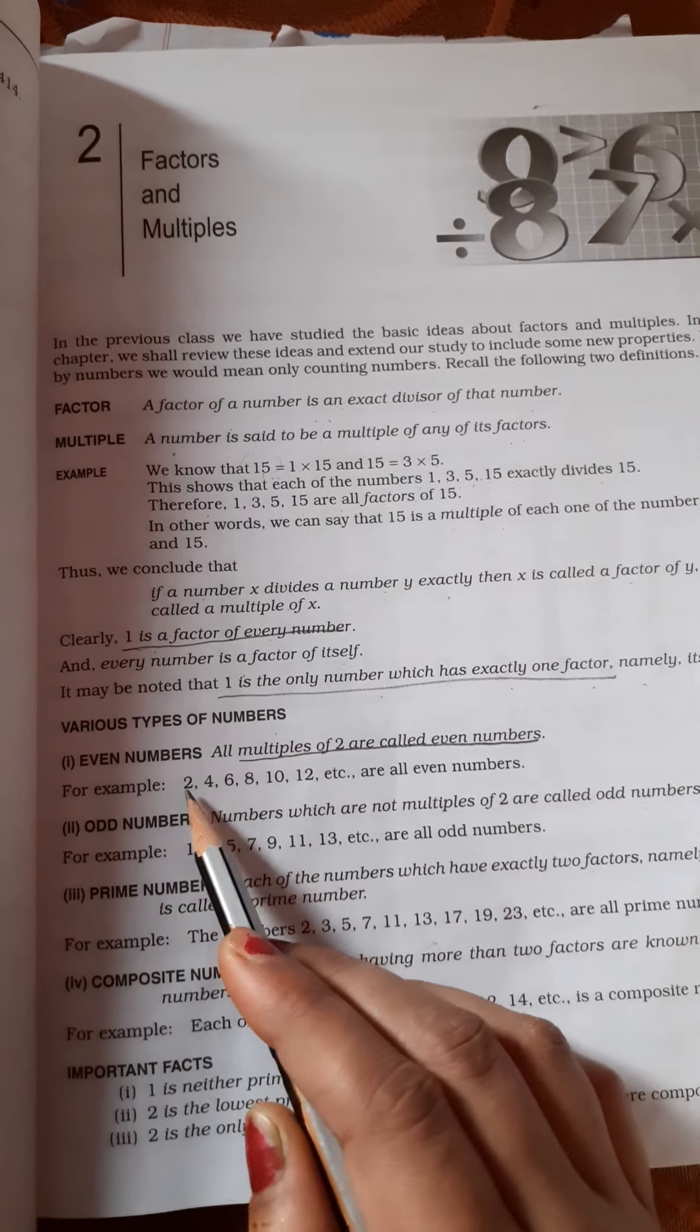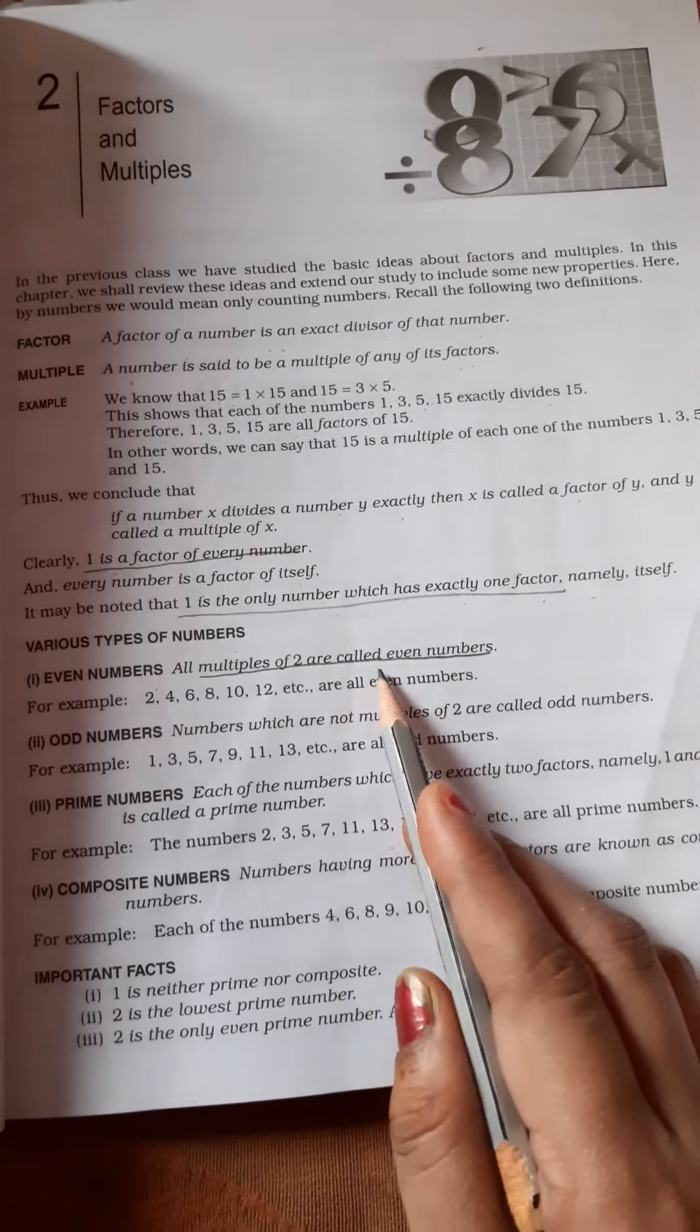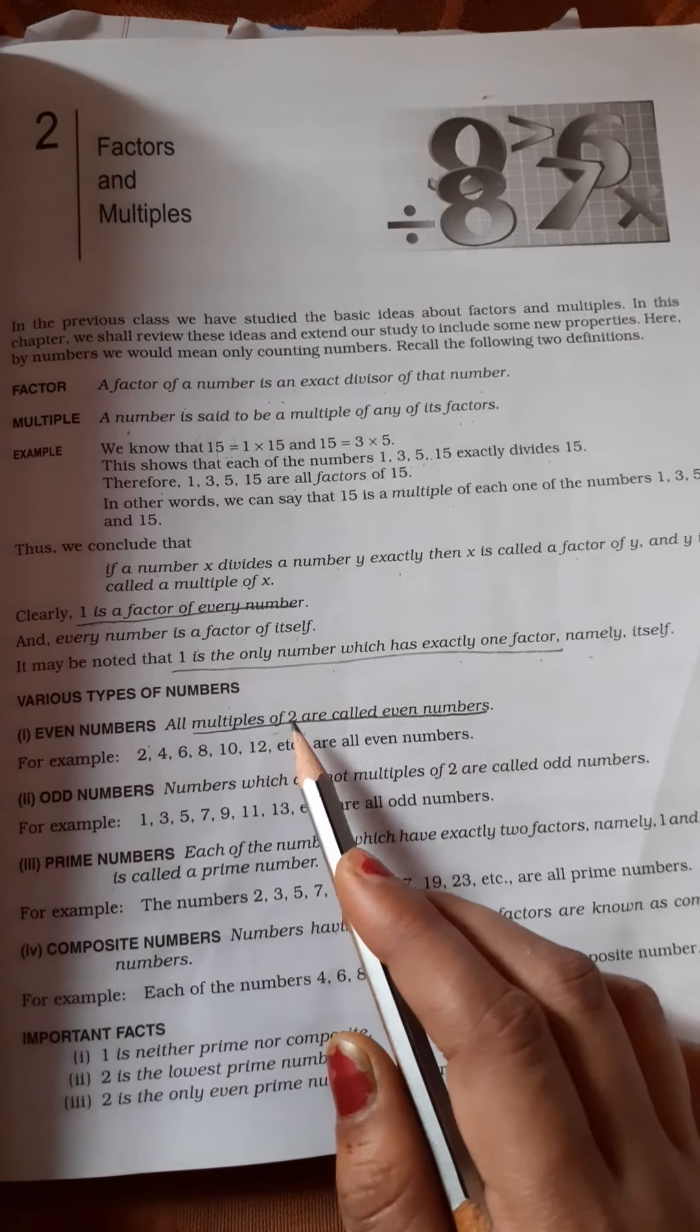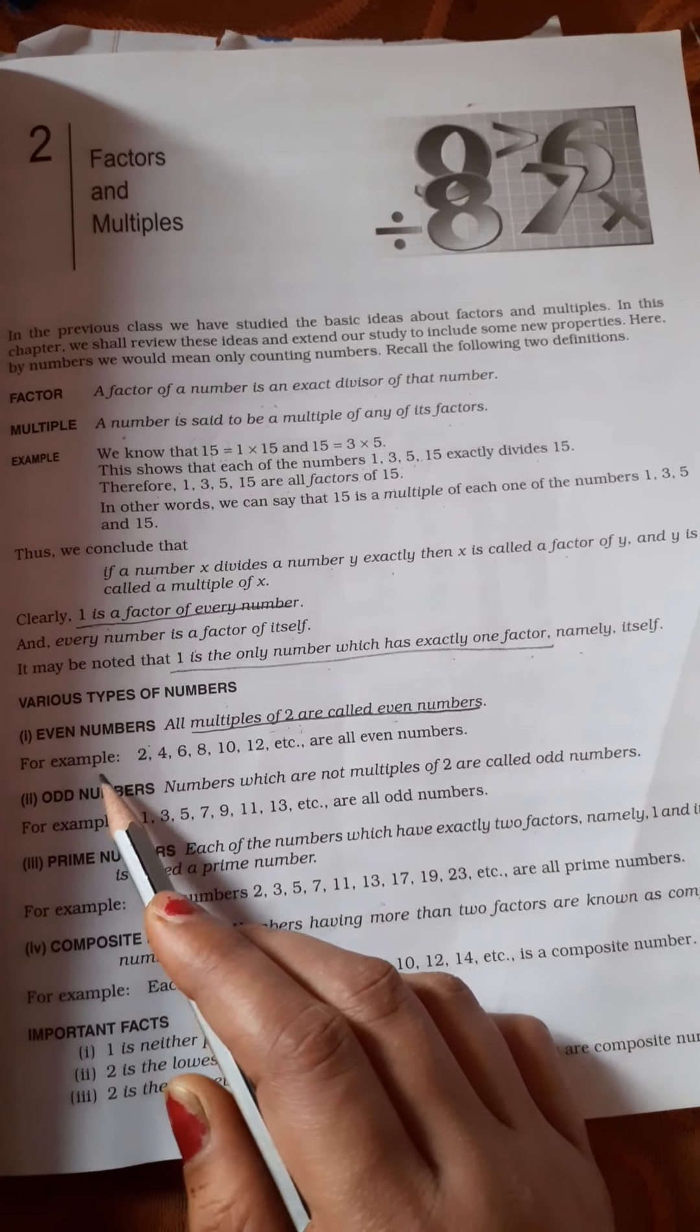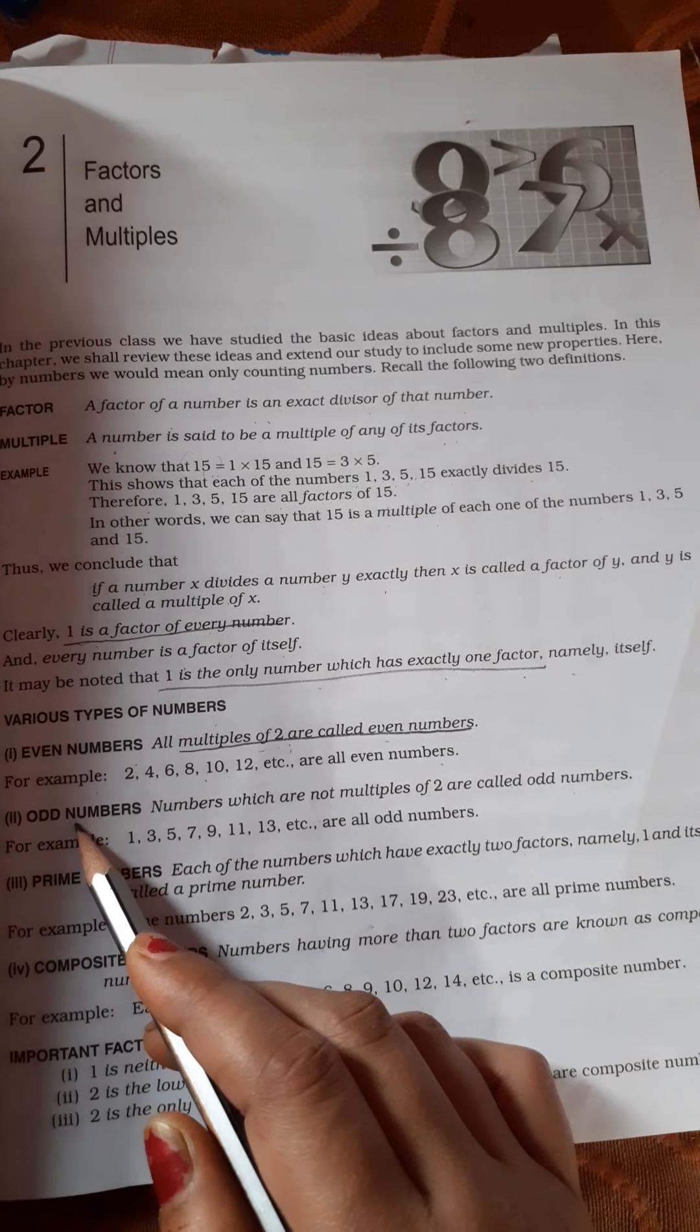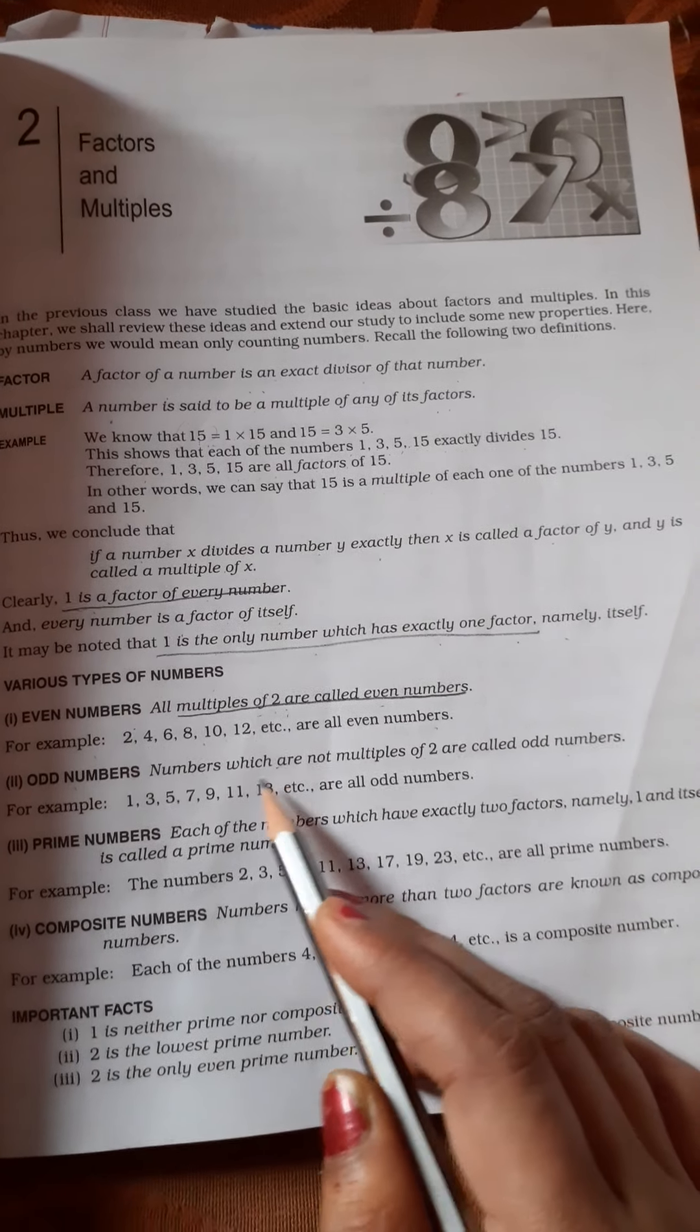Now various types of numbers. Even numbers - you all know even numbers, numbers that are completely divisible by 2, or you can say all multiples of 2 are called even numbers.